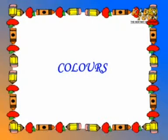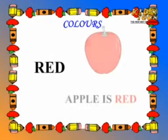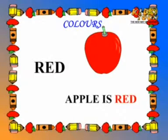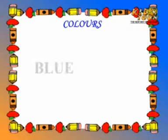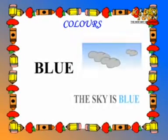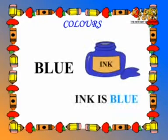Now it's time to learn colors. Red. Apple is red. Red. Tomato is red. Blue. Sky is blue. Blue. Ink pot is blue.